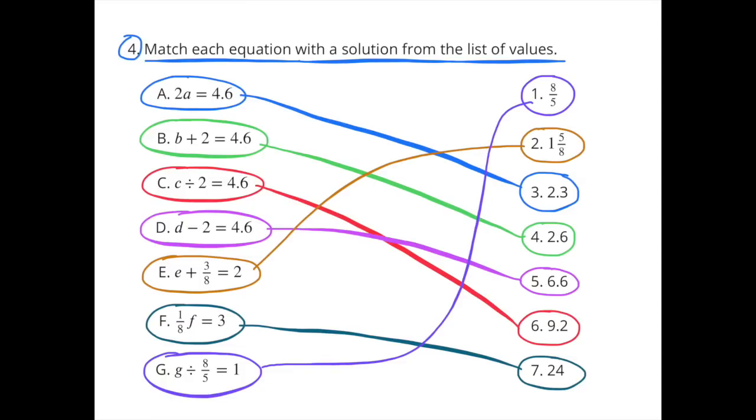Number 4. Match each equation with a solution from the list of values. A, 2A equals 4 and 6 tenths. I match that up with number 3, 2 and 3 tenths, since 2 times 2 and 3 tenths equals 4 and 6 tenths. B, B plus 2 equals 4 and 6 tenths. I match that up with number 4, 2 and 6 tenths, because 2 and 6 tenths plus 2 equals 4 and 6 tenths.